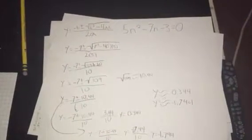This is a quadratic formula project video. The first part of this project was to do the quadratic formula with the equation 5n squared minus 7n minus 3 equals 0.